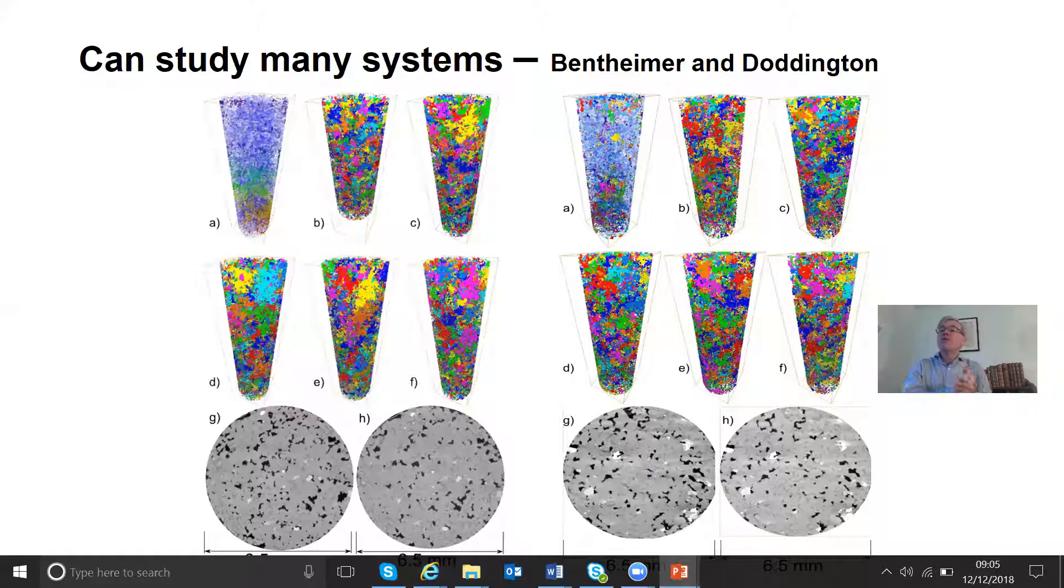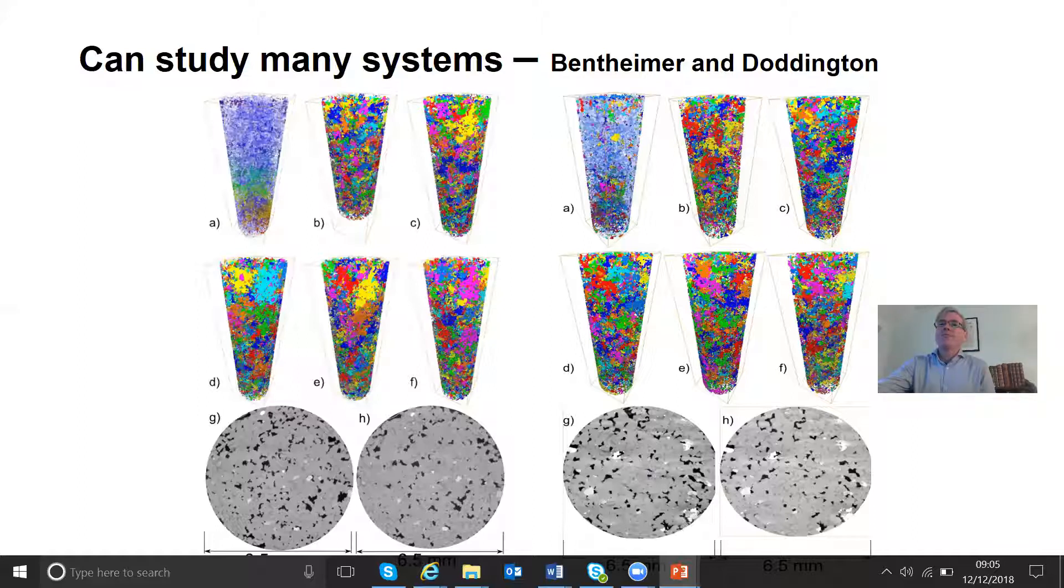So Bentheimer, we see this. We have a residual saturation here of just over 30%. But maybe there's something special about Bentheimer and other sandstones will be different. And so the next one is Doddington, another relatively uniform quarry sandstone. And we see generically the same behavior.